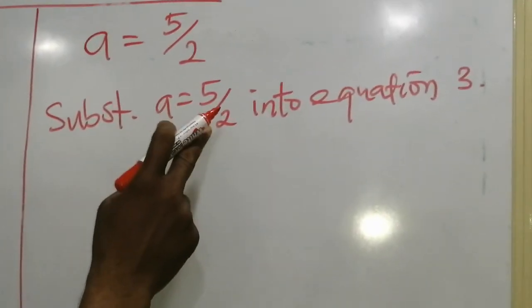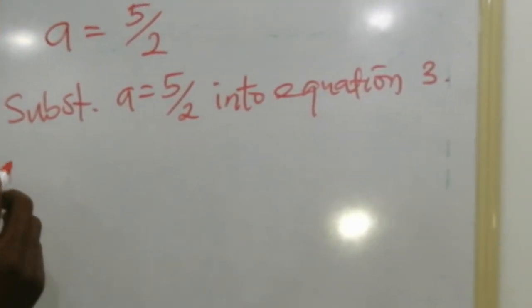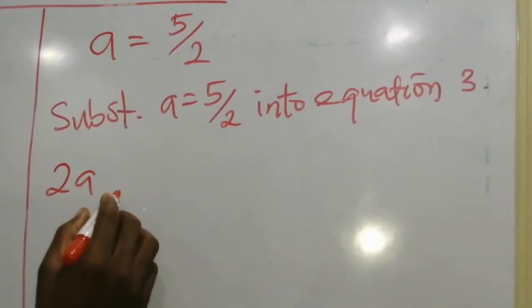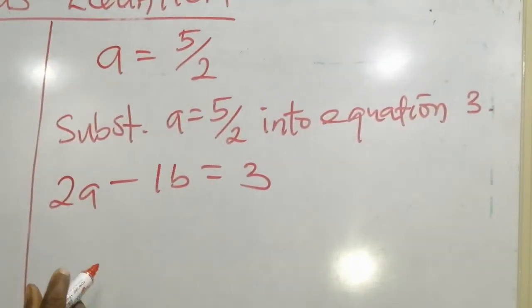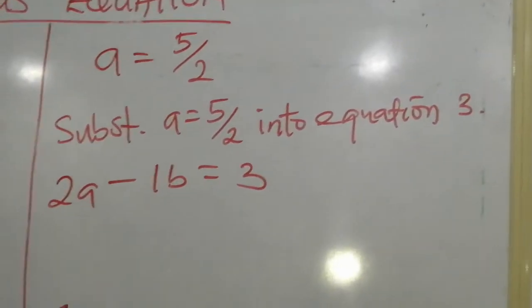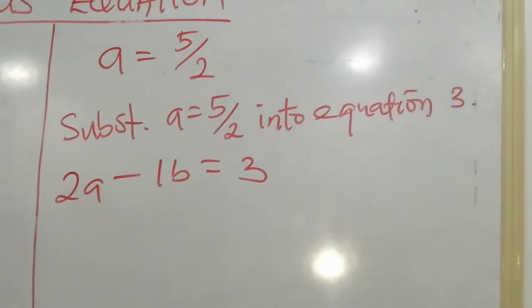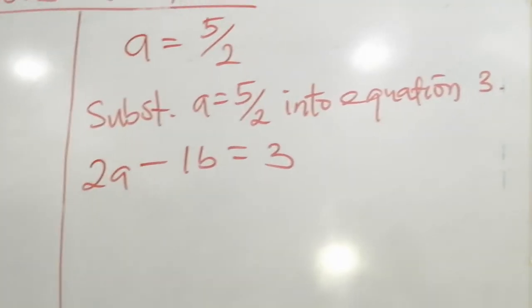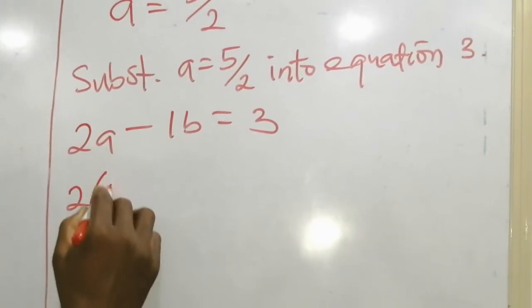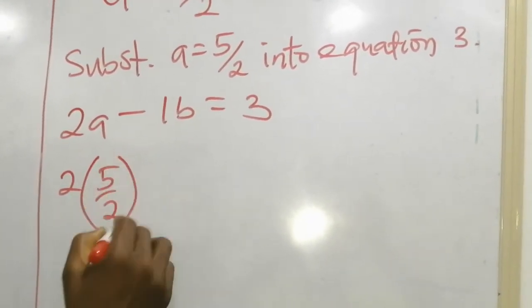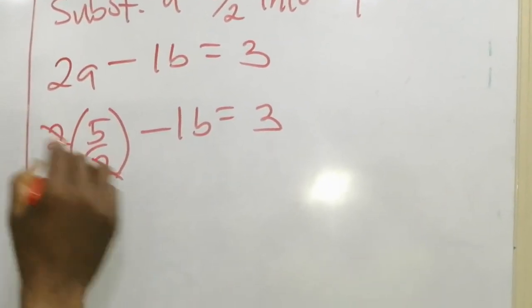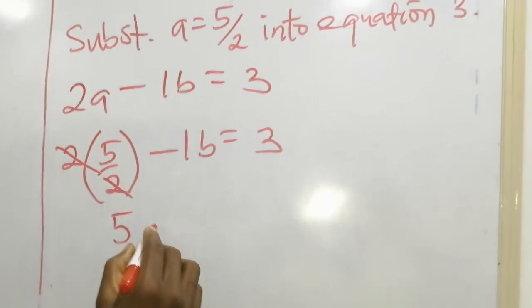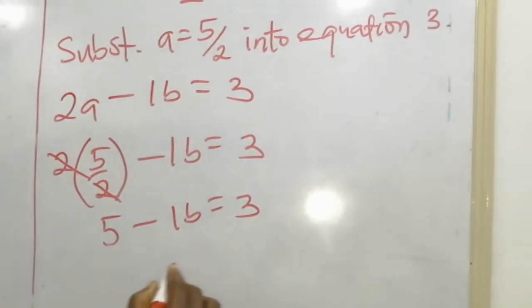So we are going to substitute a equals 5 over 2 into equation 3. Equation 3 says 2a minus 1b equals 3. So everywhere we see a, we are replacing it with 5 over 2. That is 2 into 5 over 2 minus 1b equals 3. Then 2 will cancel, we have 5 minus 1b equals 3.